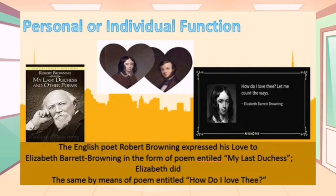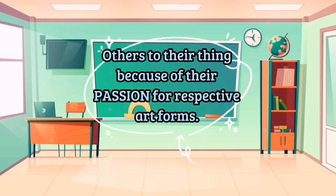Another example: the English poet Robert Browning expressed his love to Elizabeth Barrett Browning in the form of a poem entitled 'My Last Duchess.' His wife also did the same and wrote a poem entitled 'How Do I Love Thee?' They both used their poems to express their feelings to each other — that is the example of personal or individual function. Others do their thing because of their passion for their respective art forms. For instance, Gary Valenciano renders concerts for free because he loves singing.